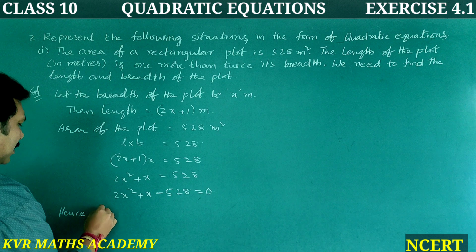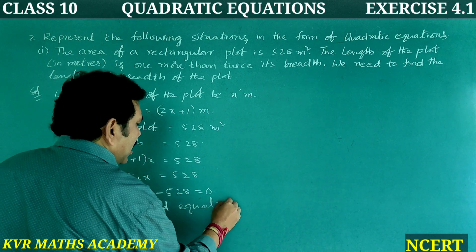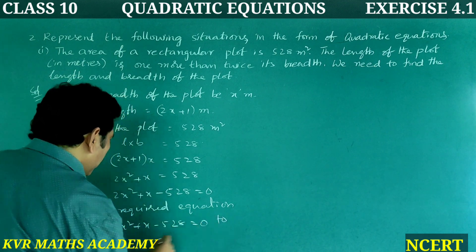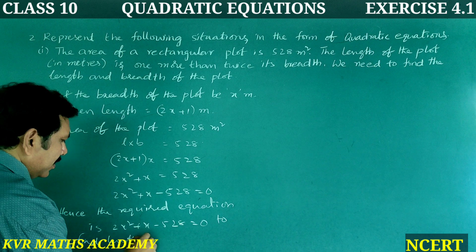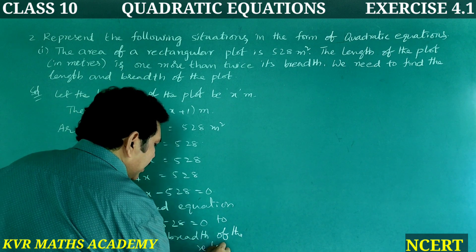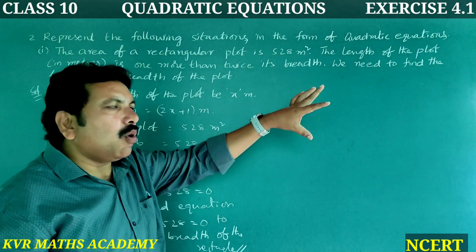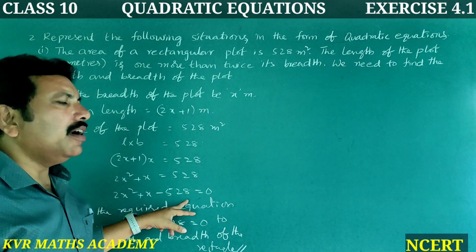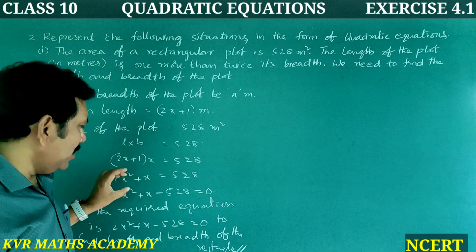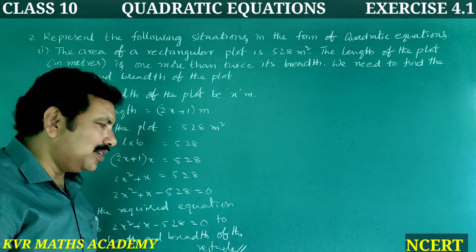Hence the required equation is 2X² + X − 528 = 0 to find the length and breadth of the rectangle.